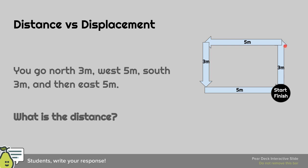South 3 meters, east 5 meters. What's my distance? I add those up: 3 plus 5 plus 3 plus 5 equals 16 meters. That's my distance, and that's a scalar. Remember, S-C-A-L-A-R, no direction.